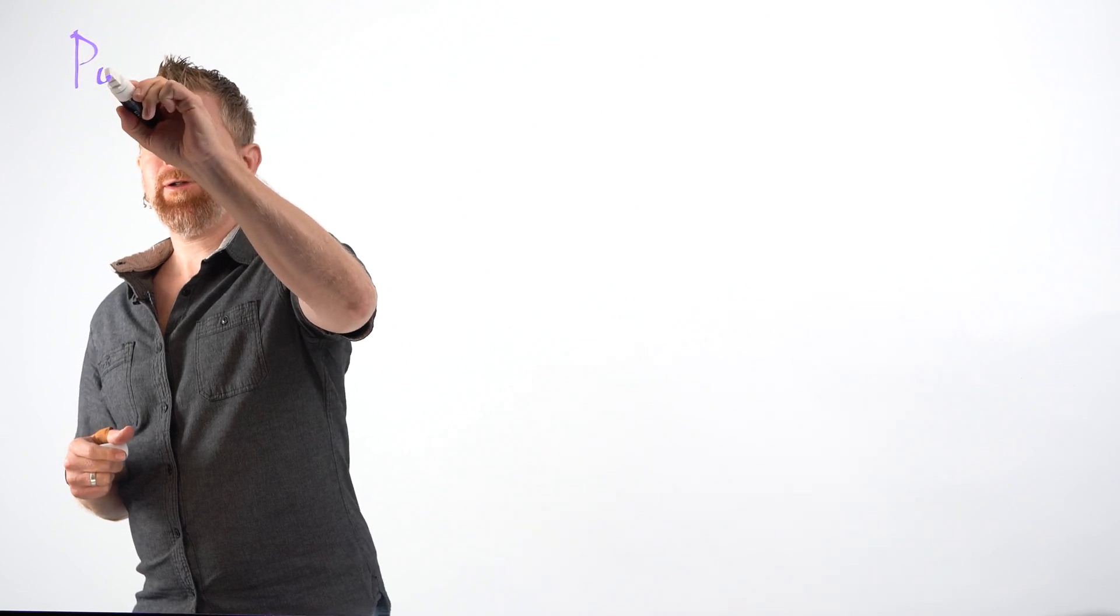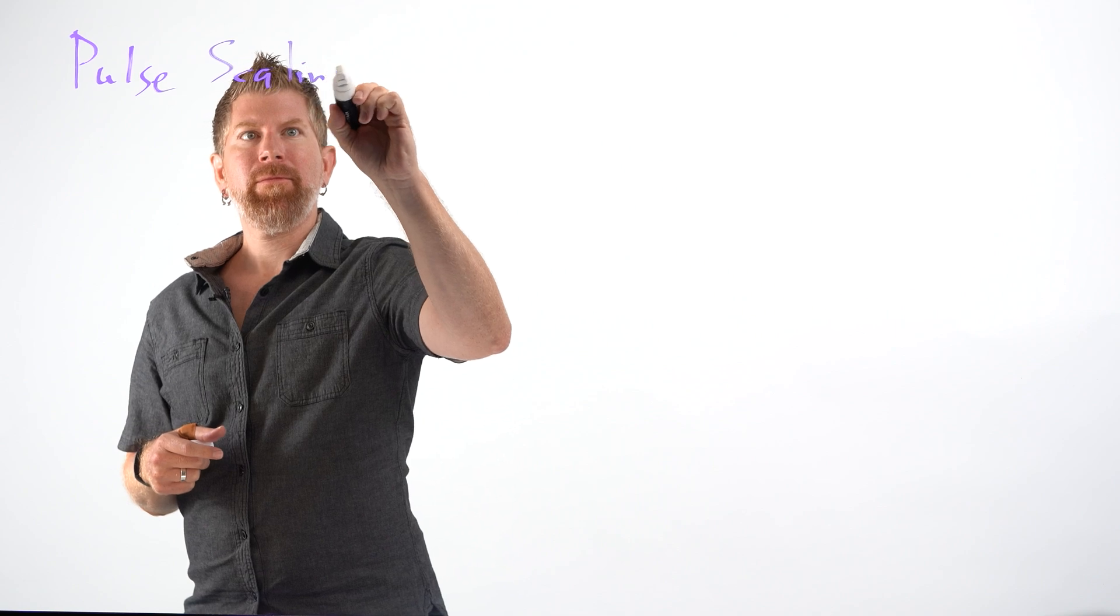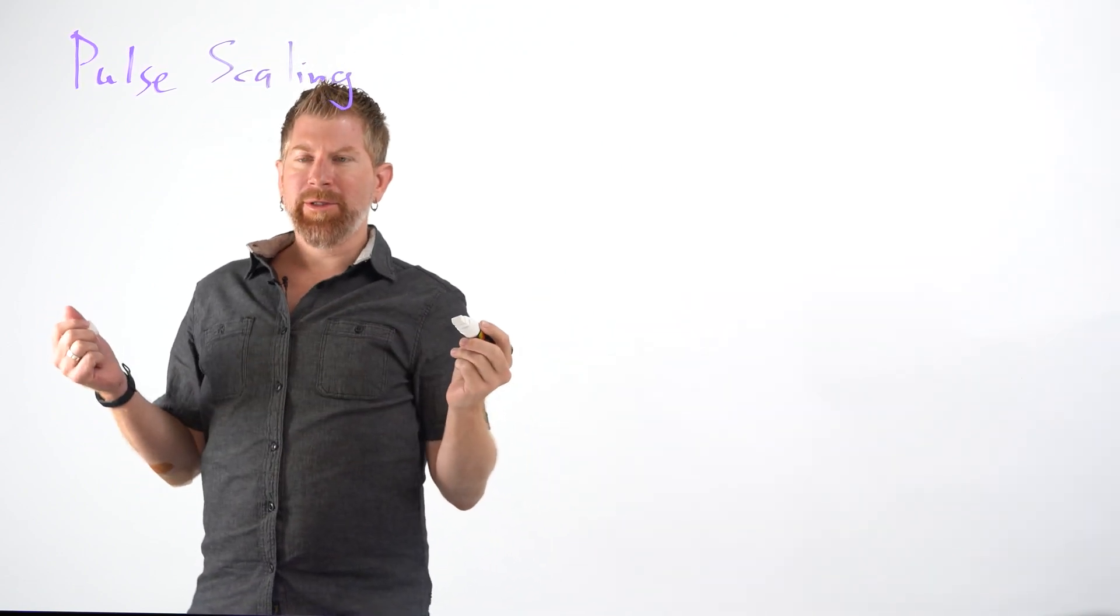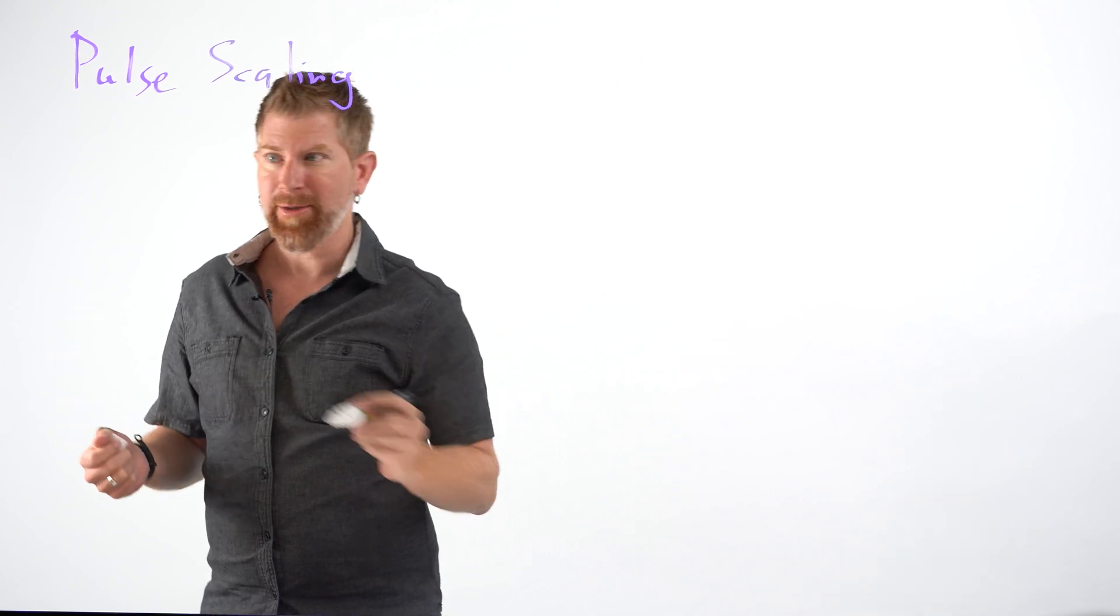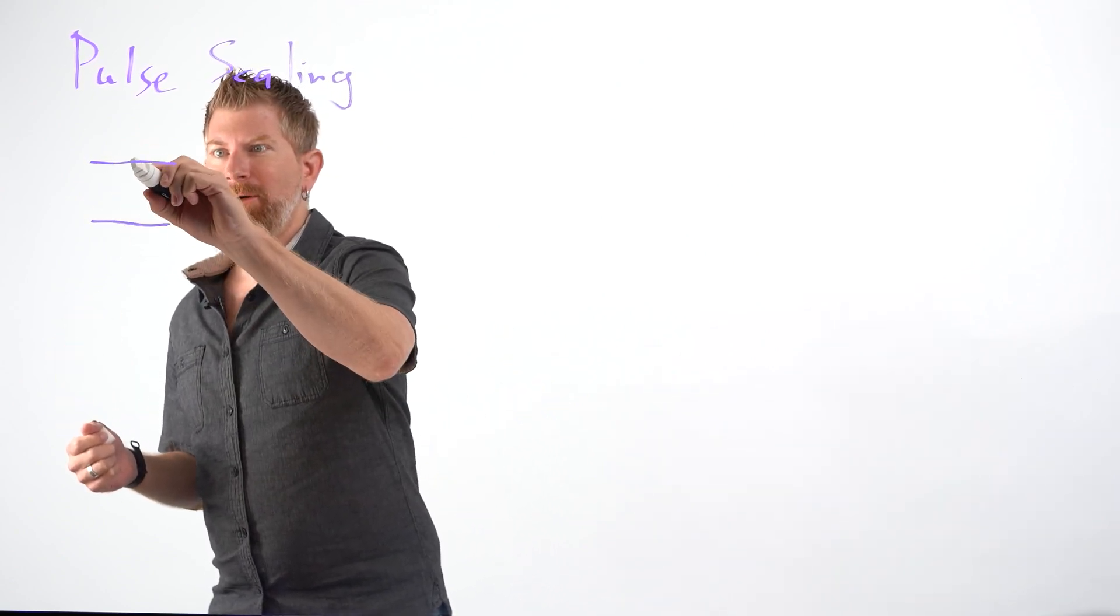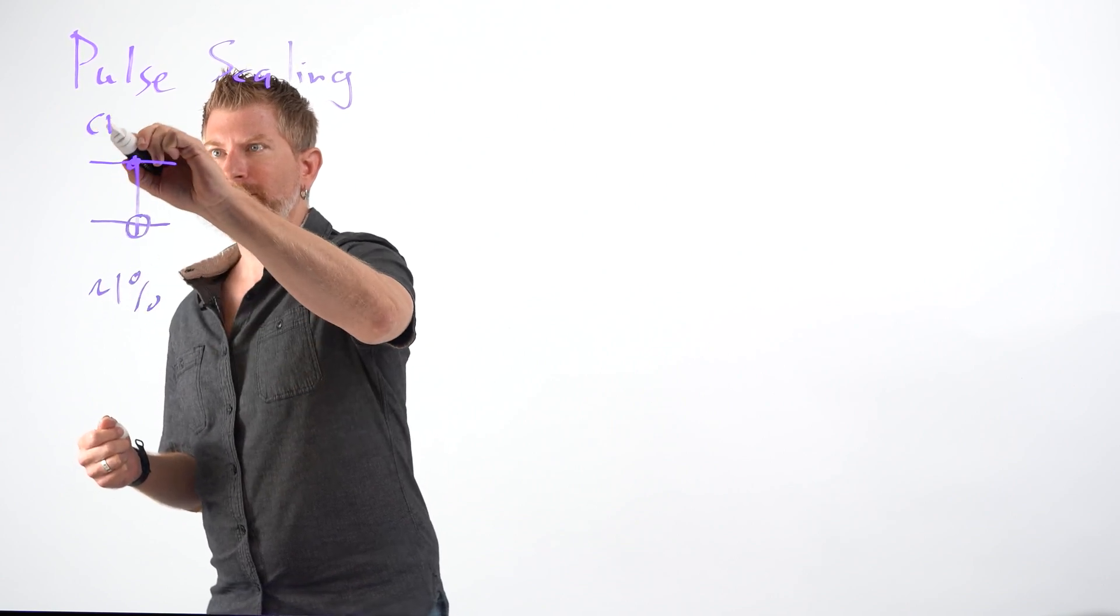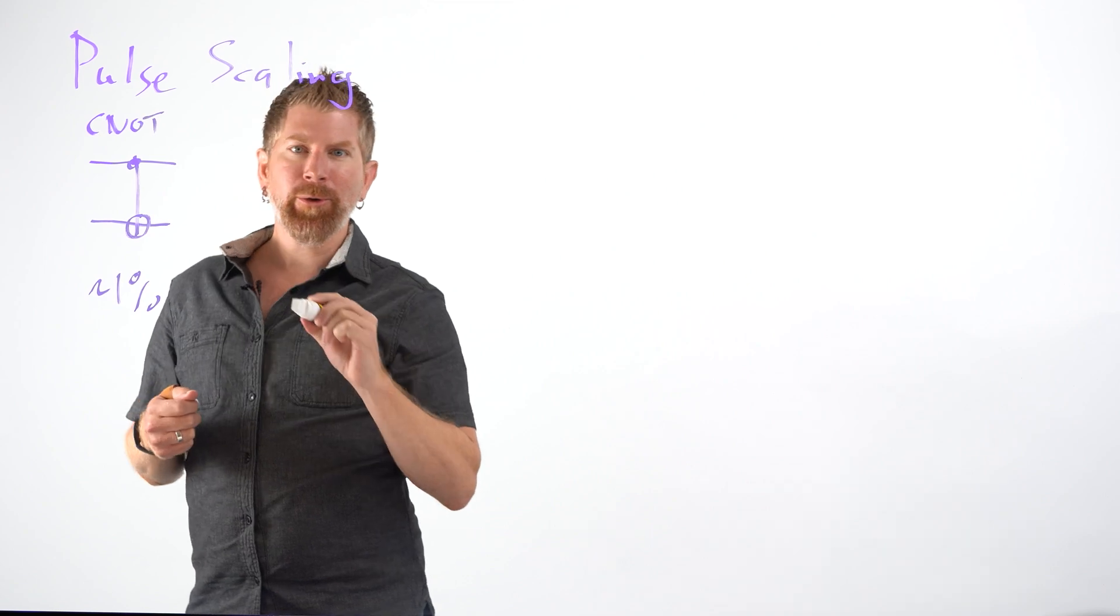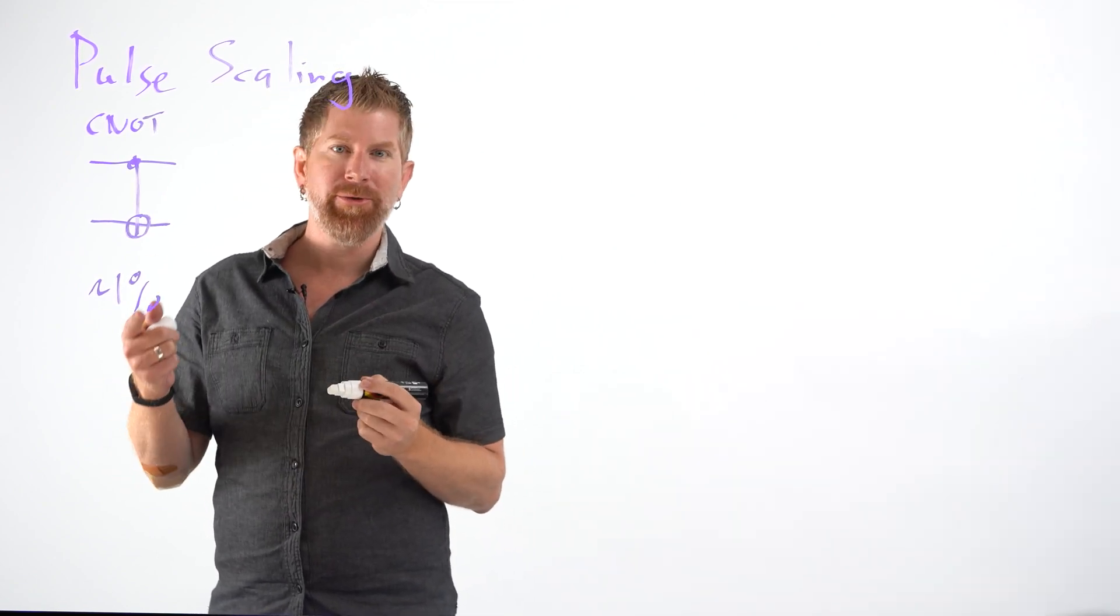What is pulse scaling? Well, to take a step back, in previous videos we've talked about reducing the number of CNOTs. CNOTs are our two qubit interaction and they have about 1% error. So if we want to efficiently do any kind of quantum algorithm, it's usually best to reduce the number of this.